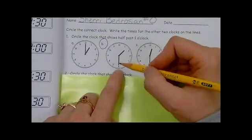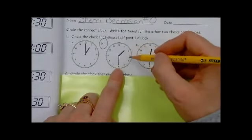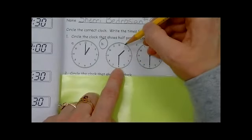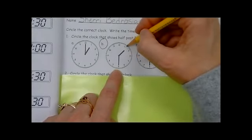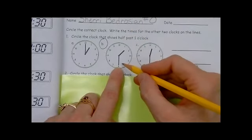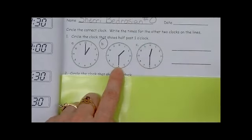I know that my minute hand is halfway around the clock, so it's half past. And if it's half past one o'clock, then I know that the hour hand has to move past the one and move towards the two. So, this shows half past one o'clock. Or 1:30 is another way of saying that, class.